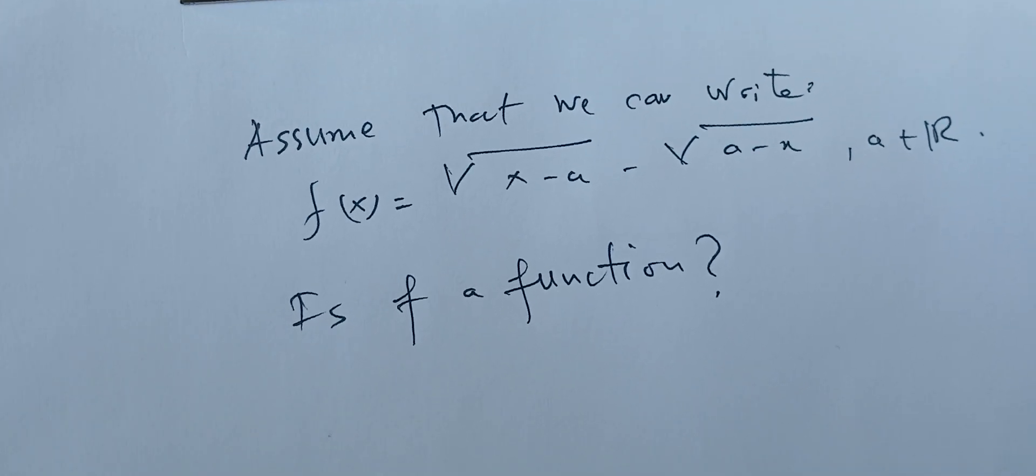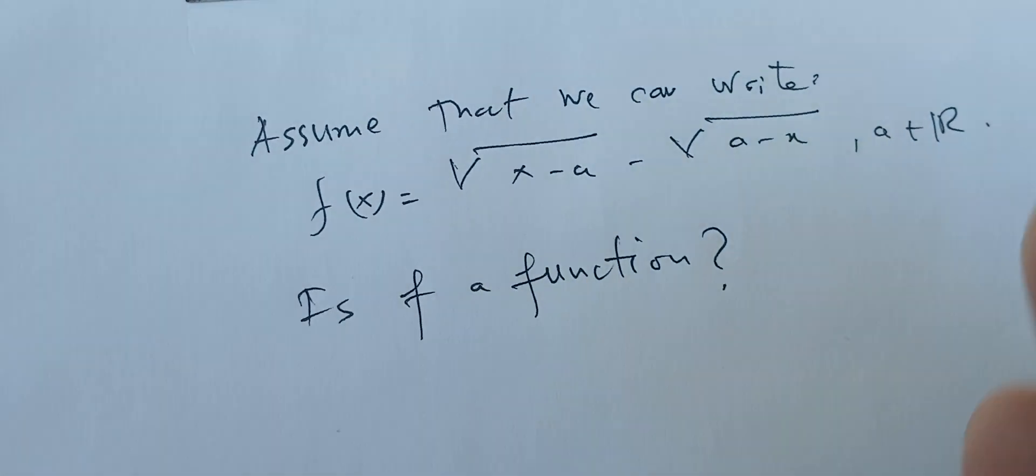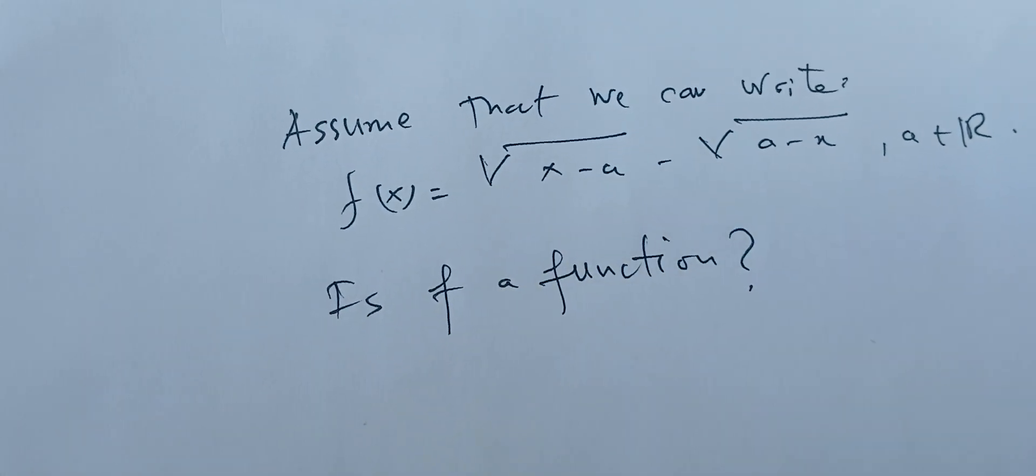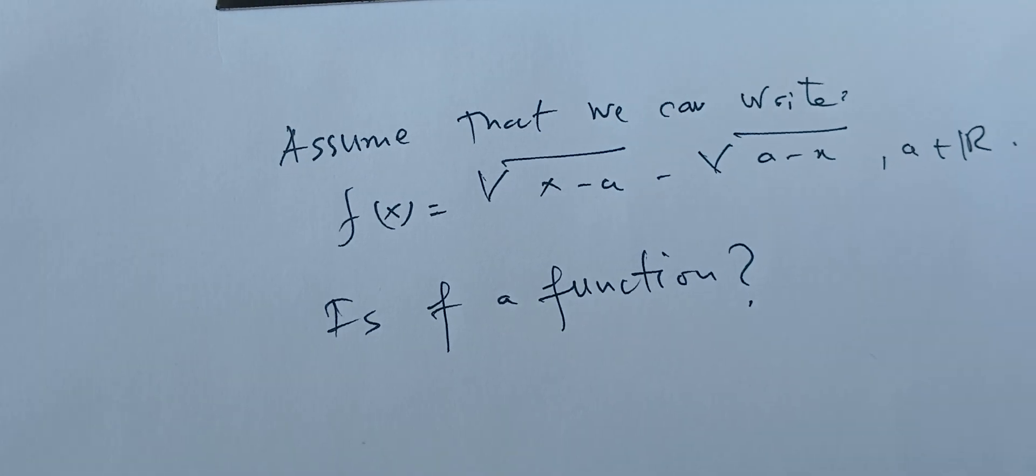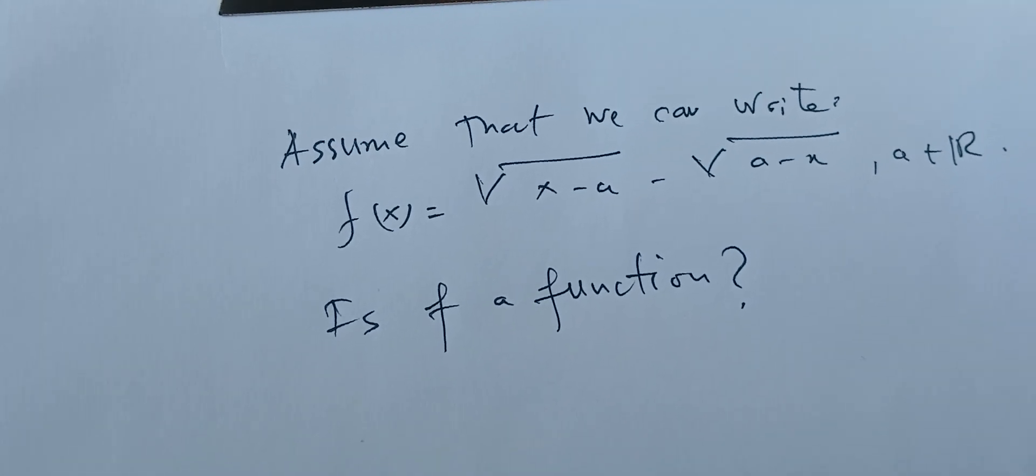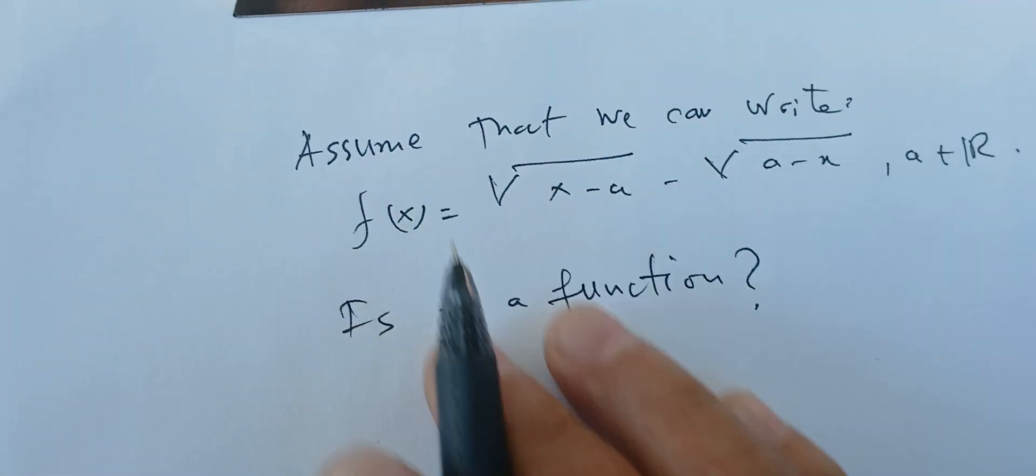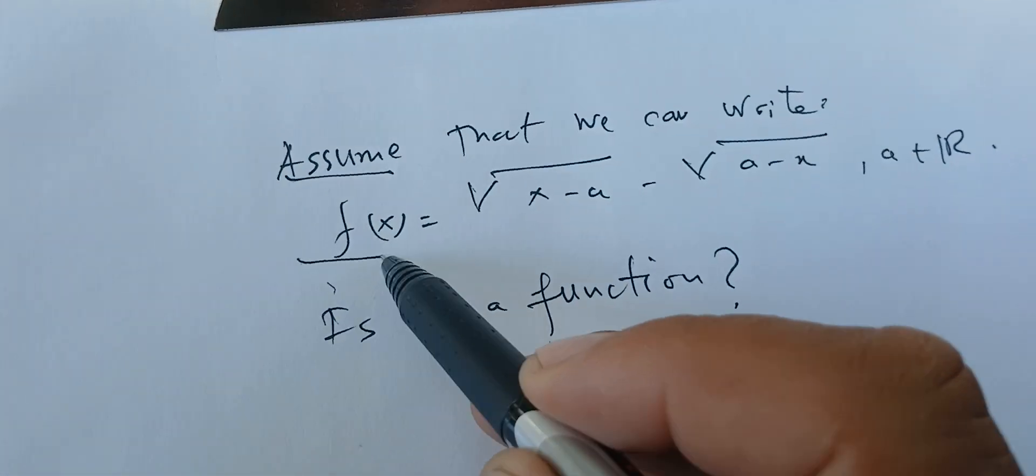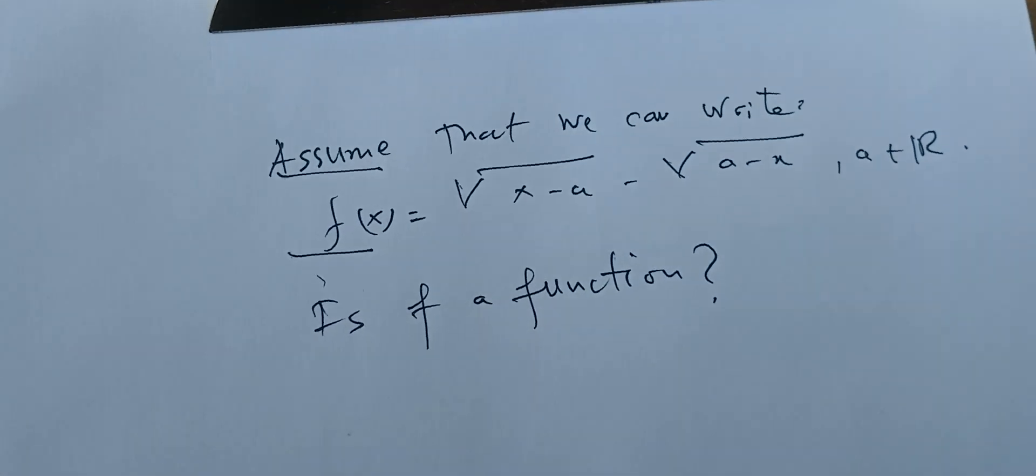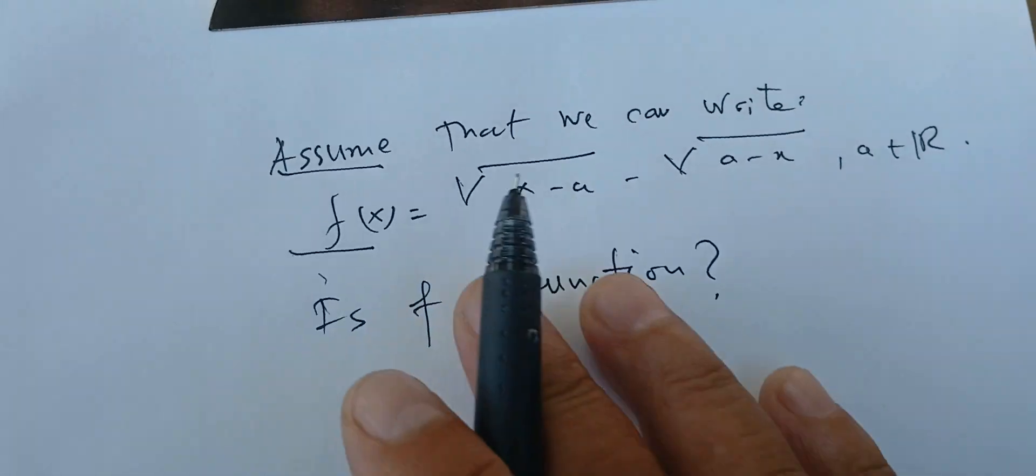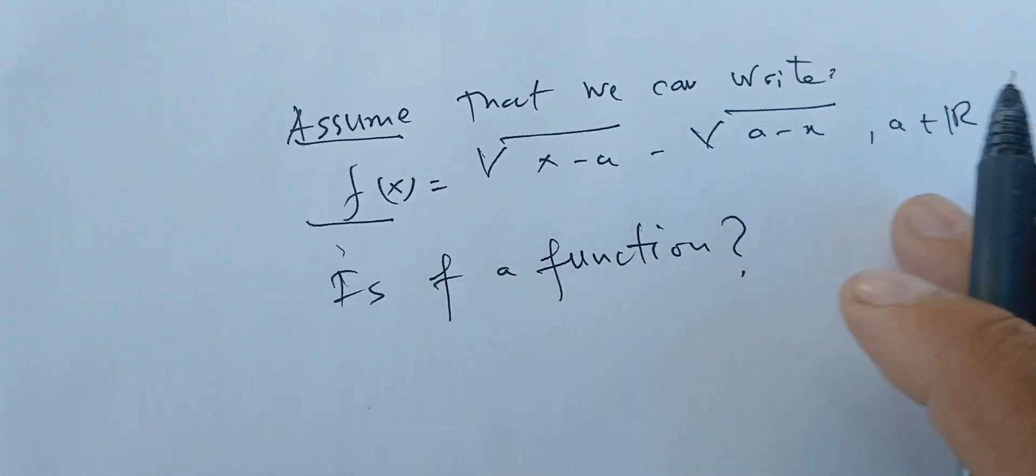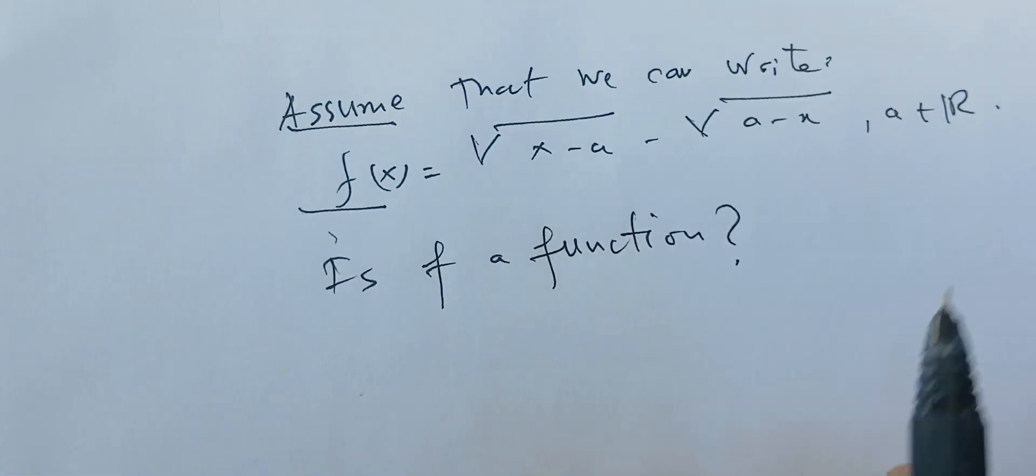So here, to define a function, we need to have a domain where every element has a unique image. We have this assumption that we can write it this way. So the first thing we're going to do is assume that we can write it this way, and we will see under what conditions we can have a function.